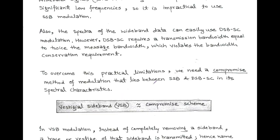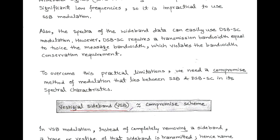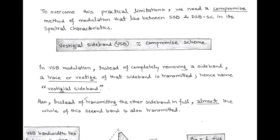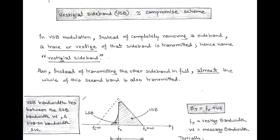To overcome these practical limitations, we need a method of modulation that compromises between single sideband suppressed carrier and double sideband suppressed carrier modulation in its spectral characteristics. We call this modified or compromised method vestigial sideband, which fulfills both the bandwidth conservation scheme and the practical applicability of the bandpass filter. Now we are going to discuss VSB modulation.